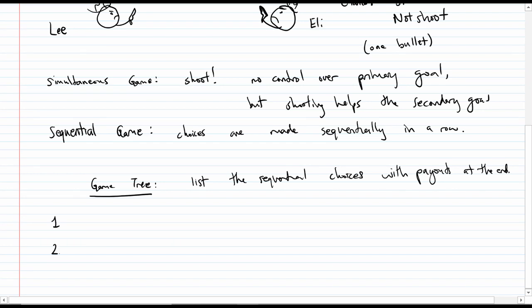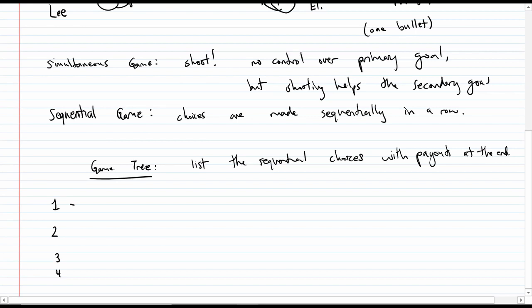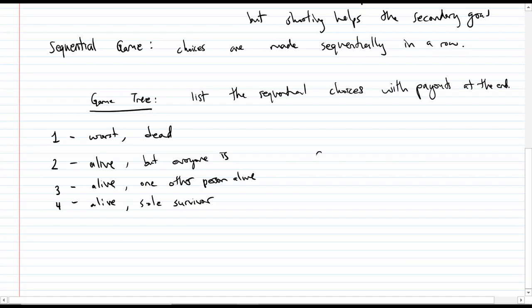We're going to write out the sequential choices and attach the payouts at the end of each of the string of choices. So let's just list the payouts that we could have in this case. We could have one, two, three, or four. One is the worst, the fewest points, and so you're going to get a one if you die. Otherwise, you're alive. How do you get more points? You get more points if you're the only one alive. So you get four points if you're the sole survivor, three points if there's one other person alive, and two points if everyone else is alive.